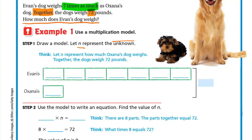We always make the unknown N represent the smaller amount. So here we have two dogs: Even's dog and Oxana's dog. Even's is bigger, Oxana's is smaller. So Oxana's we will represent with N, and Even's we will represent with 7 Ns, because it's 7 times as much as Oxana's.